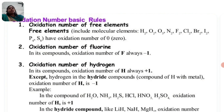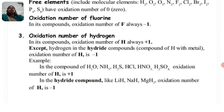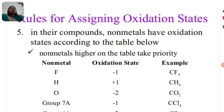The oxidation number of fluorine in its compound is always minus 1. The oxidation number of hydrogen in its compound is always plus 1, except in hydride compounds where it is minus 1. So hydrogen generally has oxidation number plus 1, but in hydride compounds — which are compounds of H with metals — the oxidation number of H is minus 1. For example, in H2O, NH3, H2S, HCl, HNO3, H2SO4, the oxidation number of hydrogen is plus 1. In hydride compounds like lithium hydride, sodium hydride, and magnesium hydride, the oxidation number of H is minus 1.